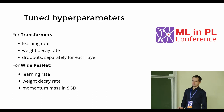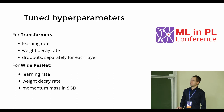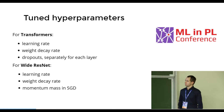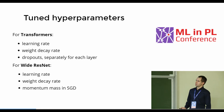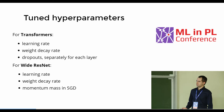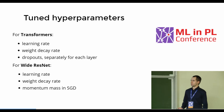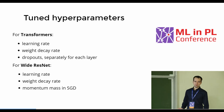Let's talk about what hyperparameters we are going to tune. For the transformer tasks we will tune the learning rate and weight decay rate, and also various dropouts in various layers. For Wide ResNet we are going to tune the learning rate, weight decay rate, and momentum mass in stochastic gradient descent with Nesterov momentum.